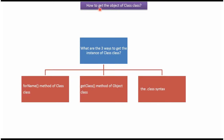In this video tutorial, I will cover how to get the object of the Class class. There are three ways we can get the object of Class class. The first way is using the forName method of Class class. The second way is using the getClass method of Object class. And the third way is using the dot class syntax.